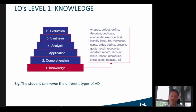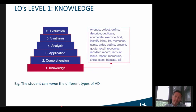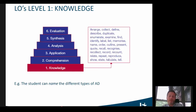Let me give some concrete examples, starting from the lowest level — the knowledge level. This means that the student should have the ability to recall or remember facts, without necessarily really understanding them. A possible learning outcome there could be that the student can name the different types of AD.